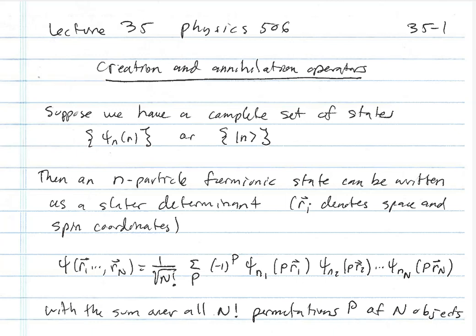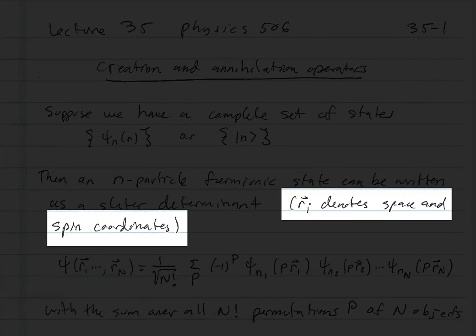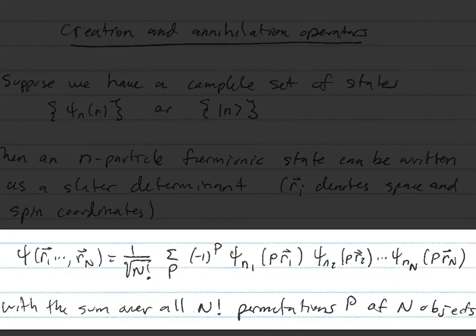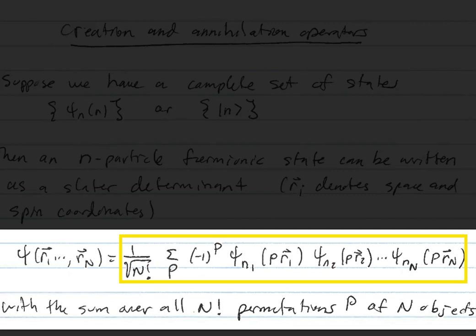The answer to this question was worked out by John Slater, perhaps as early as the 1920s, certainly by the 1930s. He said: let's denote the coordinates of the different particles by the label r_i, a generic label that includes both the space and spin coordinates. Then the many-body wave function, which is a function of r1, r2, r3, all the way out to rN, can be written as 1 over the square root of N factorial — the normalization — multiplied by the sum over all permutations P of minus 1 to the P times the products of psi_n1, psi_n2, all the way out to psi_nN, with the arguments being a permutation of the space and spin coordinates.